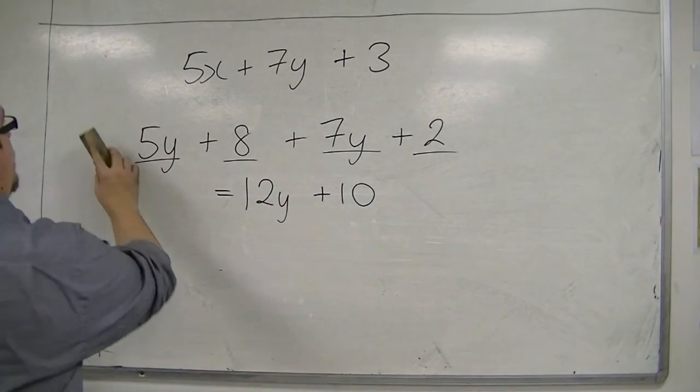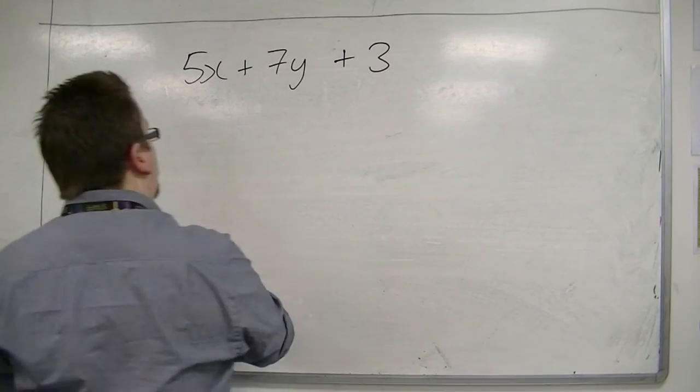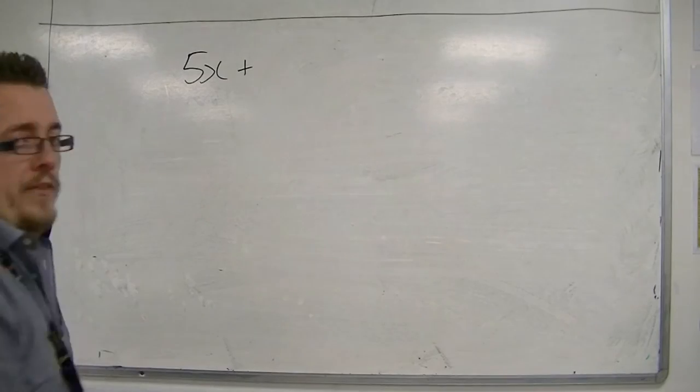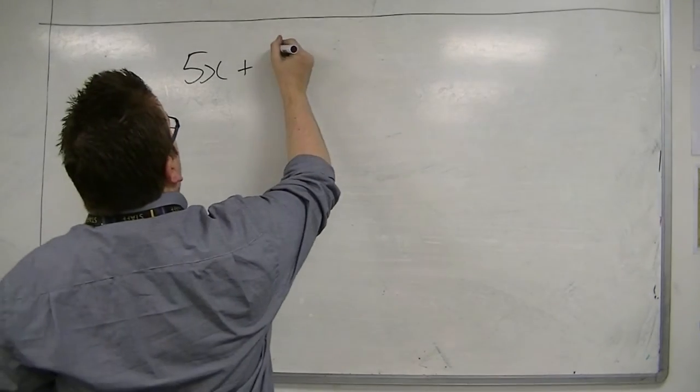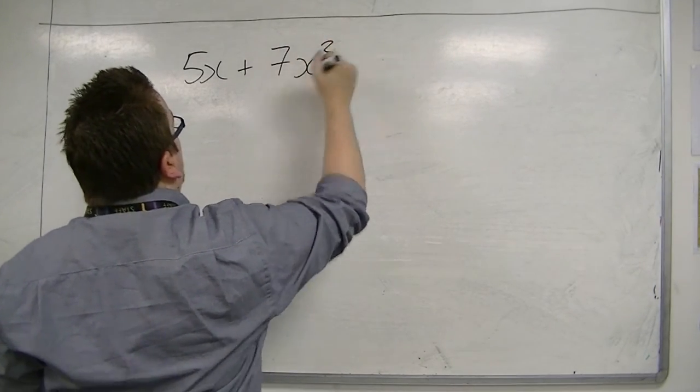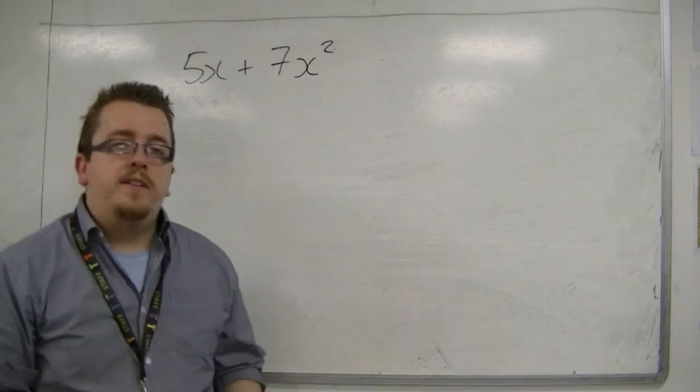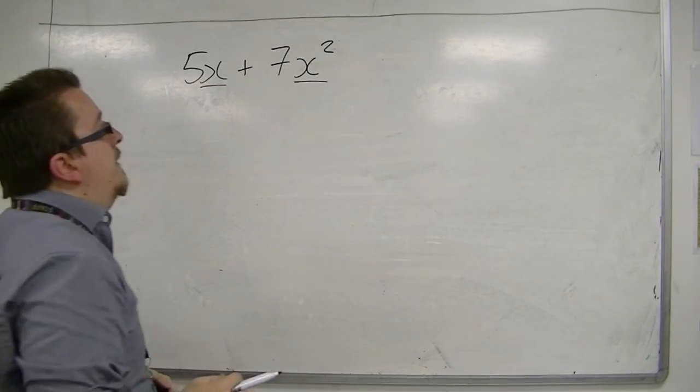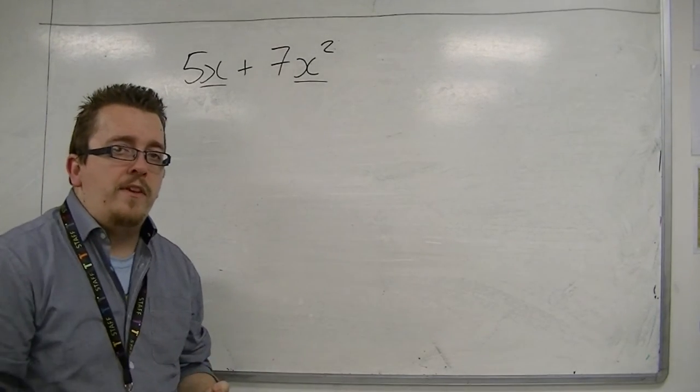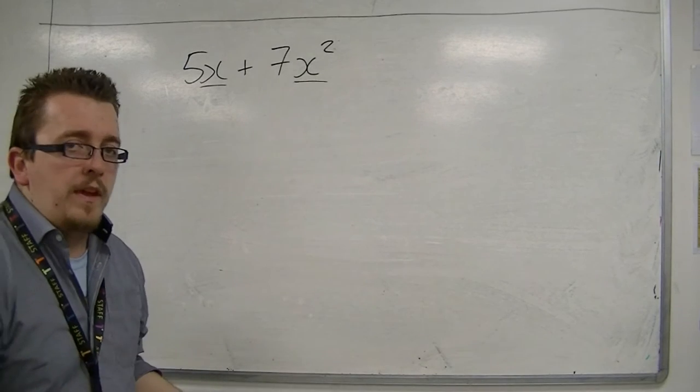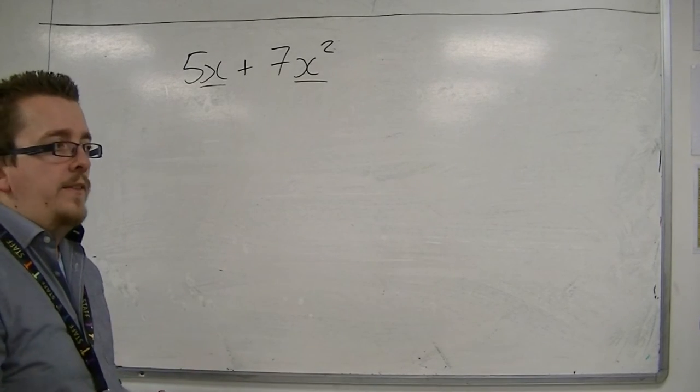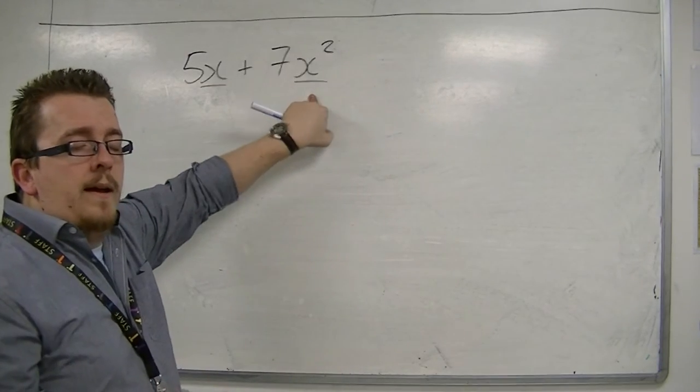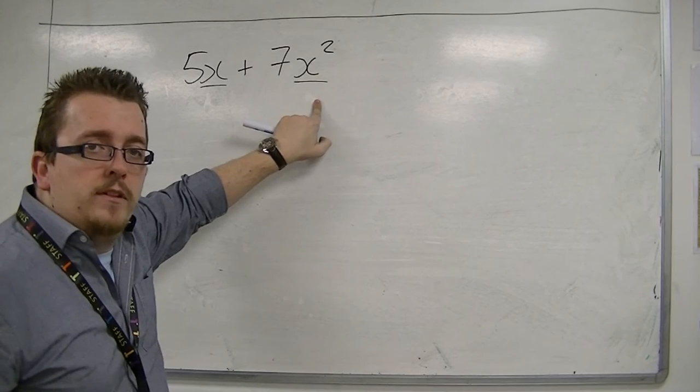Let's see another thing here, another note. So we have already said that 5x and 7y can't be combined. Well, also 5x and 7x squared, they cannot be combined either. The fact that we have an x and an x squared, when we are combining terms together, these are different things. x and x squared are different things. So they go into different piles. You might as well treat x squared as a completely different letter.